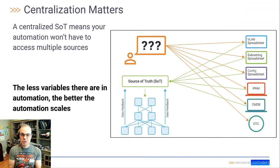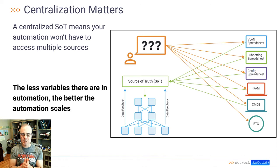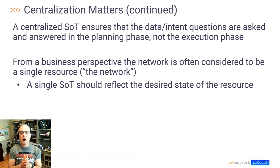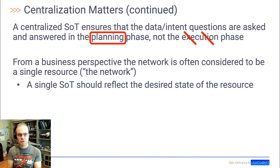Centralization matters. A centralized source of truth means your automation won't have to access multiple resources. This greatly simplifies your automation framework and platform. A centralized source of truth also ensures that the intent questions are answered in the planning phase instead of the execution phase.